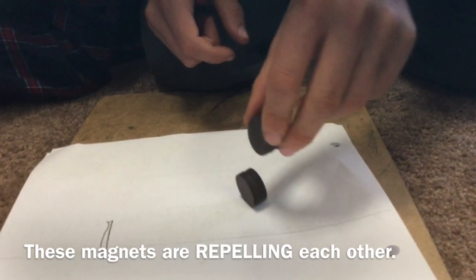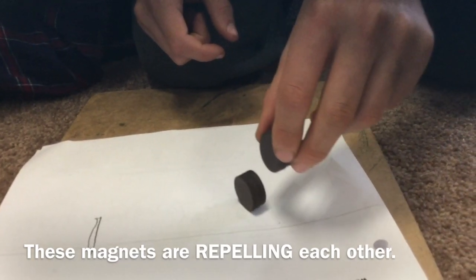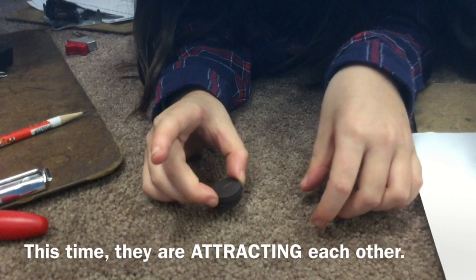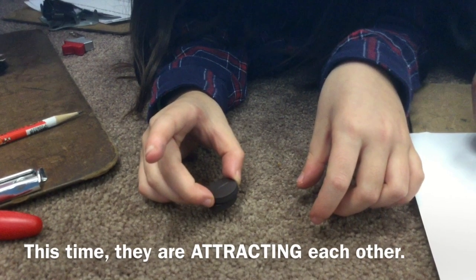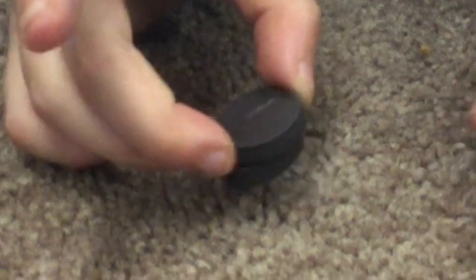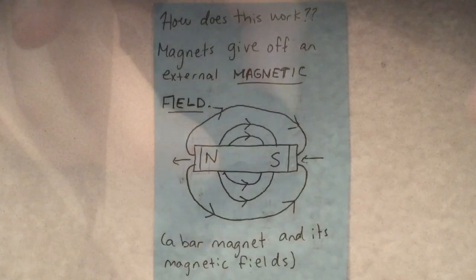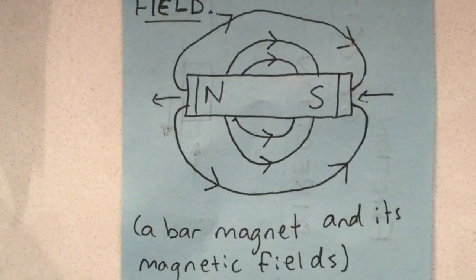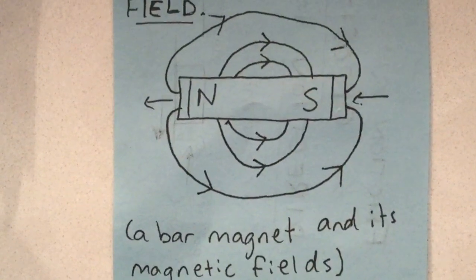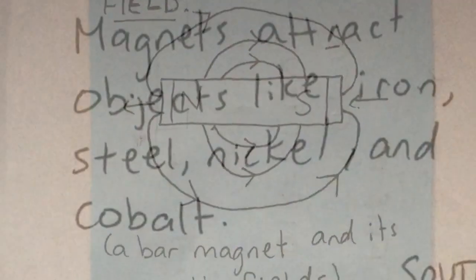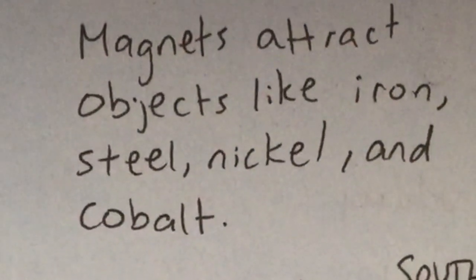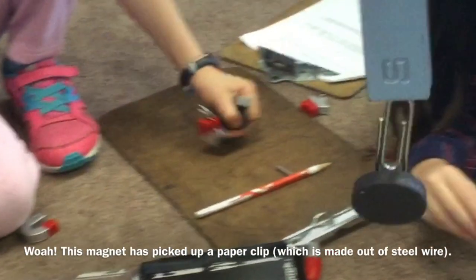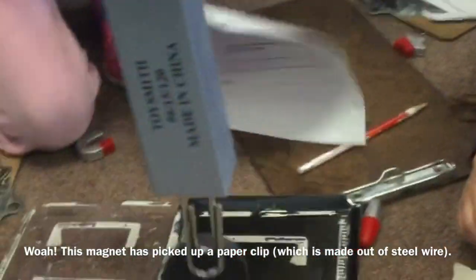These magnets are repelling each other. This time, they are attracting each other. Magnets give off an external magnetic field. Here is a picture of a bar magnet and its magnetic fields. Magnets attract objects like iron, steel, nickel, and cobalt. Whoa! This magnet has picked up a paper clip which is made out of steel wire.